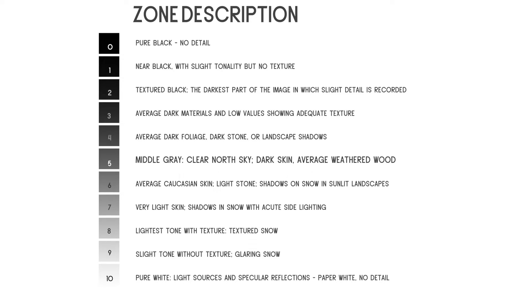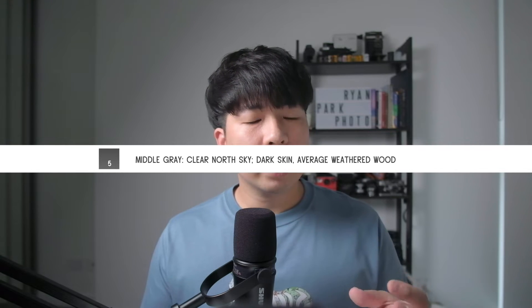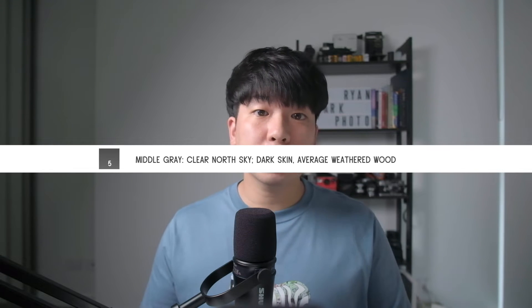Looking at the zone chart: zone zero is pure black with no information, zone one is nearly black, and from zone two you can see slight details and texture. Zone three has a good amount of detail and texture, zone five is middle gray, and zones six through ten mirror zones zero through four on the bright side. Middle gray, or 18% gray, is important as a universal scale in exposure. When you use a light meter, it measures and shows the exposure setting for middle gray — it doesn't know what kind of photo you're taking, it simply measures the exposure of the spot for middle gray.